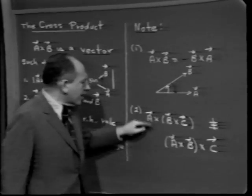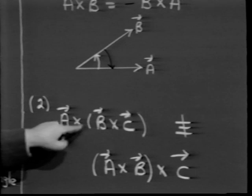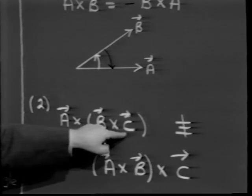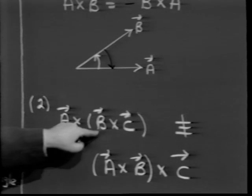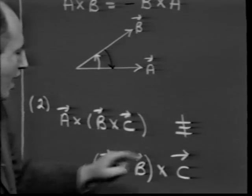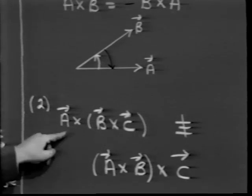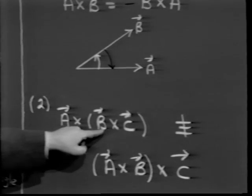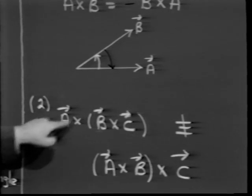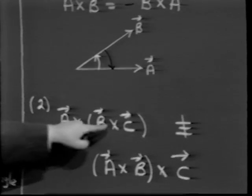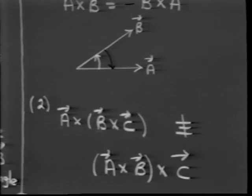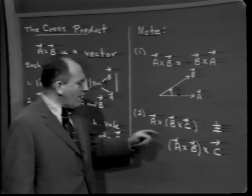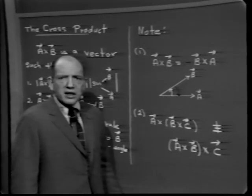Unlike the dot product, where a·b·c doesn't even make sense, it is true that a×(b×c) and (a×b)×c do make sense — they're both vectors. However, in general, these two vectors do not have to be equal; they don't even have to be in the same plane, let alone parallel planes.